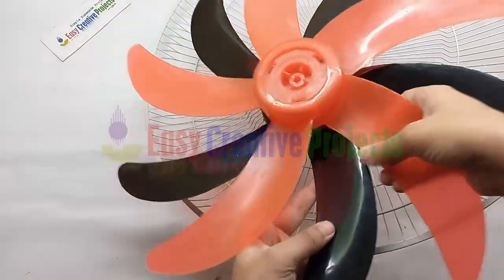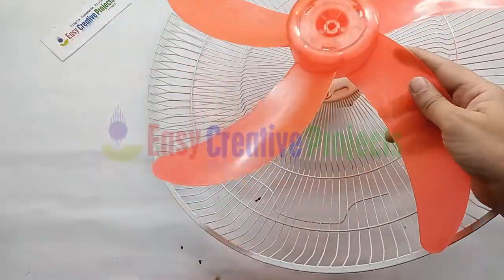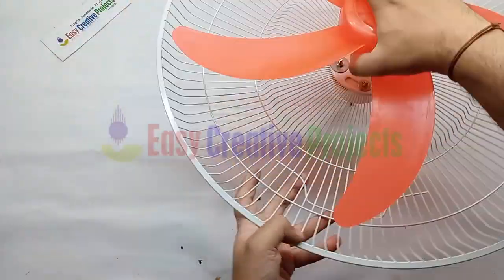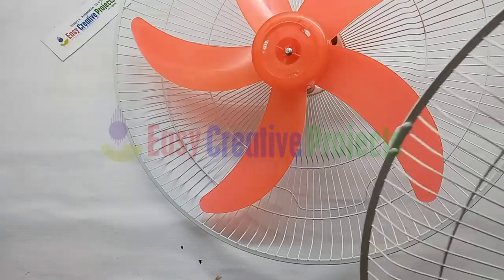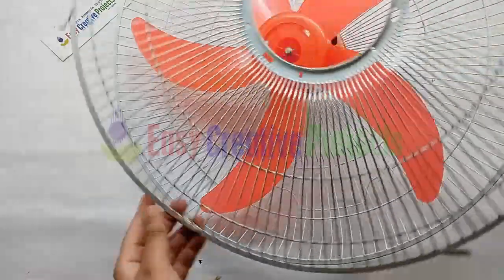Now take a fan wing and adjust it on DC motor like this. Now cover it with second side of jolly.